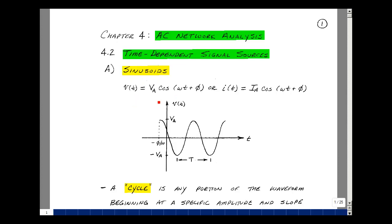Suppose you have a voltage V of t. We'll say that's equal to V sub a times the cosine of omega t plus phi, or perhaps a current I of t equal to I sub a cosine of omega t plus phi. Let's sketch V of t versus time. Here's that cosine function going up and going down, and we'll define some of the terms below. The cosine goes between plus 1 and minus 1.